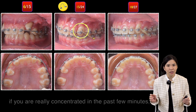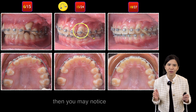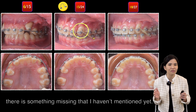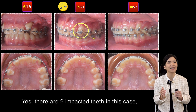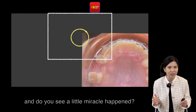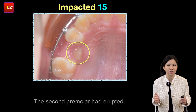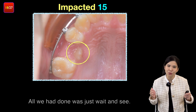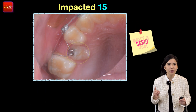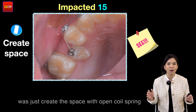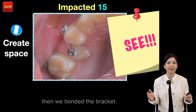At this point, if you have been paying close attention, you may wonder that something is missing that hasn't been mentioned yet. Yes — there are two impacted teeth in this case. A little miracle happened: the second premolar had erupted, and all we did was wait and see. The only thing we did was create space with an open coil spring, wait for it to auto-erupt, and then bond the bracket.